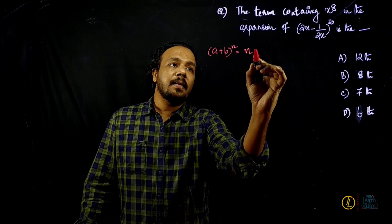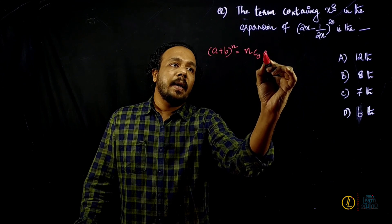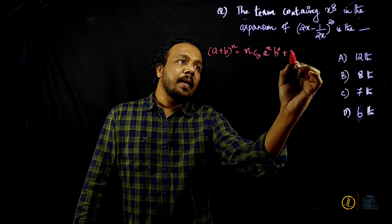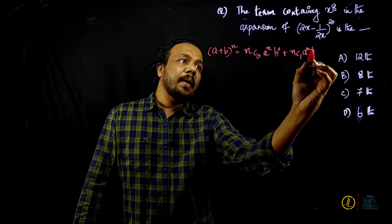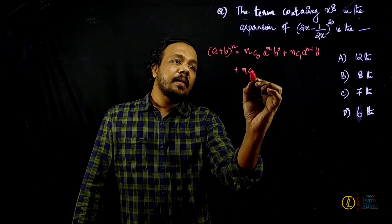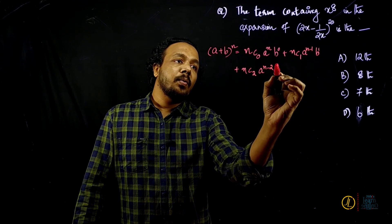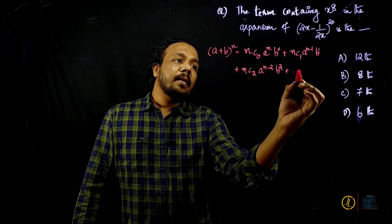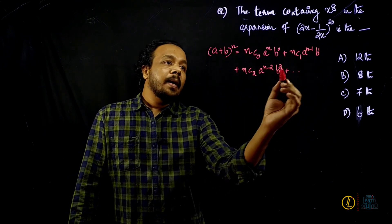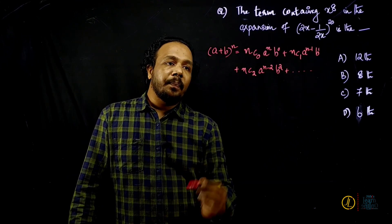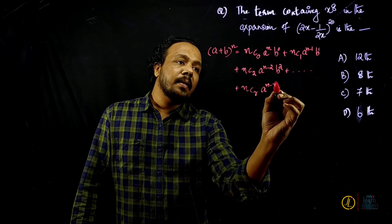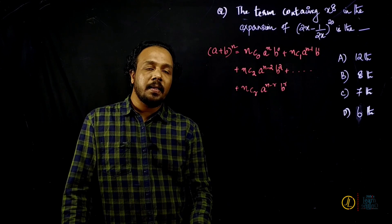In the binomial expansion, we have terms like nC2 · a^(n-2) · b^2, nC3 · a^(n-3) · b^3, and so on. The general term is nCr · a^(n-r) · b^r. This general term is very important.